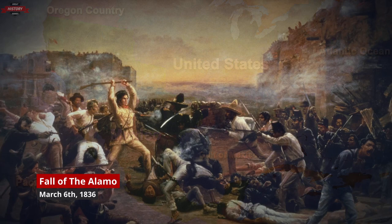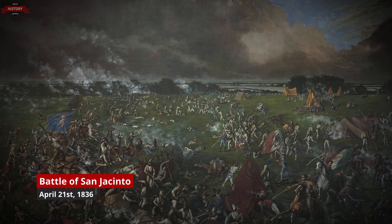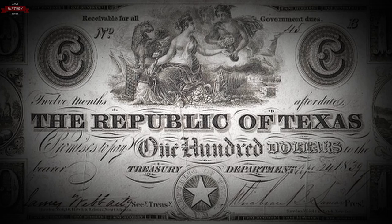In 1835, Texans revolted against Mexico, and on April 21, 1836, they defeated the Mexican army, allowing Texas to become an independent country. The Republic of Texas was never recognized by Mexico, as it was considered a province in rebellion. As a result, the borders were never officially established between Mexico and the Republic of Texas.